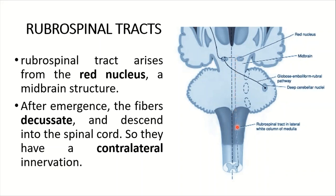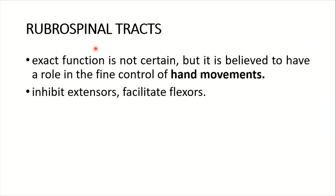After emergence, the rubrospinal tract fibers decussate and descend into the spinal cord, providing contralateral innervation. Its exact function is not certain, but it is believed to have a role in the fine control of hand movements. It inhibits extensors and facilitates flexors.